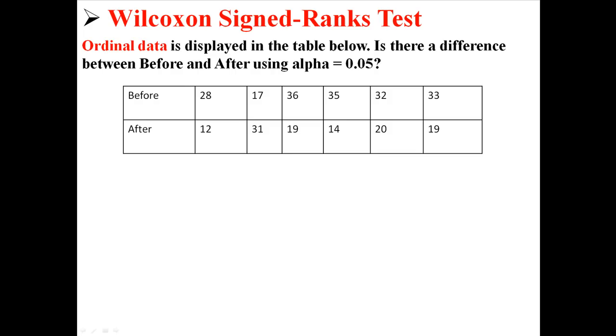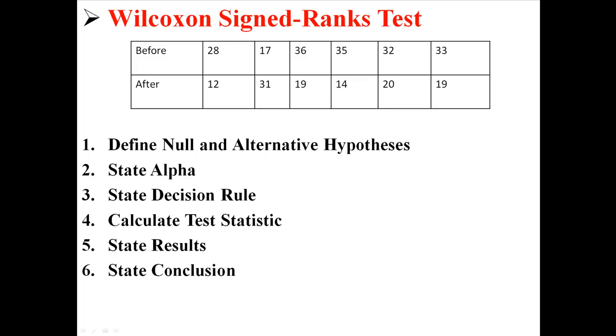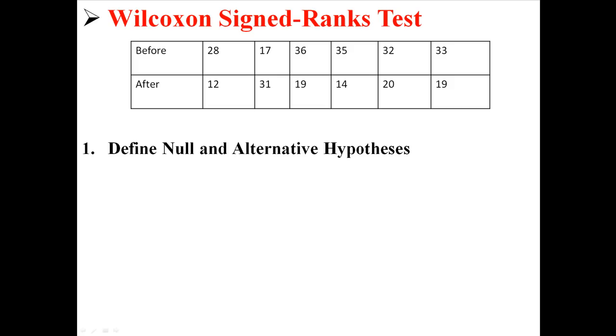So we're going to do a Wilcoxon signed ranks test just like any other statistical test. Our first step is to state the null and alternative hypotheses. Now remember this is just like a dependent samples t-test, so our null is that there's no difference between the two treatments and the alternative is that there is a difference between the two treatments.